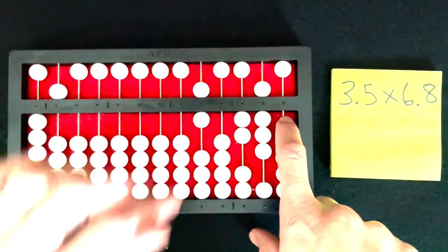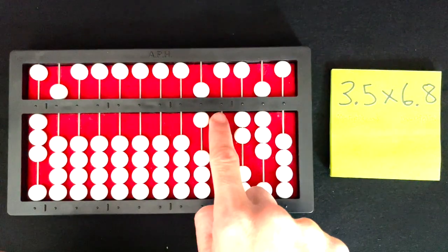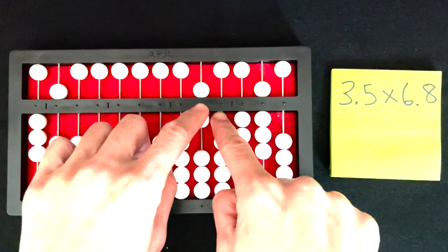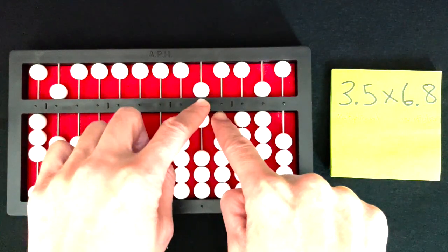I'm going to clear the 8 from my multiplier, and I'm going to move my right index finger directly to the right of my multiplier, which is 6 now.